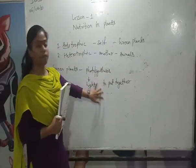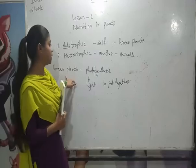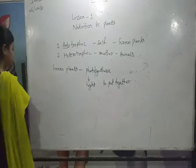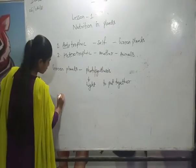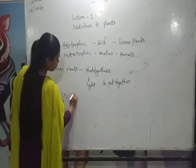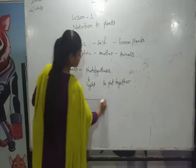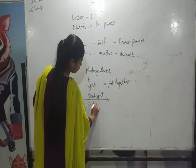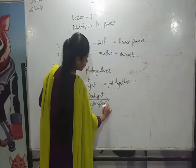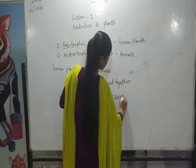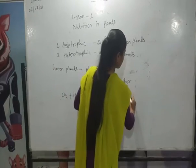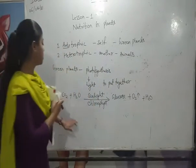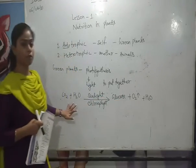Now, to put together — what things do we put together to make food in plants through photosynthesis? Photosynthesis takes carbon dioxide from the air and water from the roots, then uses sunlight with the help of chlorophyll. It makes glucose or starch and releases oxygen gas, and a little amount of water also. This is the whole reaction for photosynthesis.